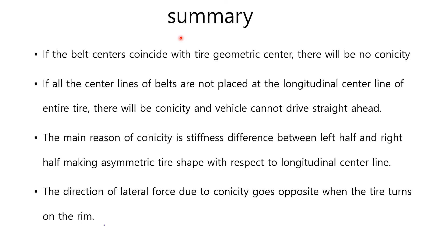Here is the summary. If the belt centers coincide with the tire geometric center, there will be no conicity. If all the center lines of belts are not placed at the longitudinal center line of the entire tire, there will be conicity and the vehicle cannot drive straight ahead. The main reason for conicity is the stiffness difference between the left half and right half, creating an asymmetric tire shape with respect to the longitudinal center line. The direction of lateral force due to conicity goes opposite when the tire turns on the rims.